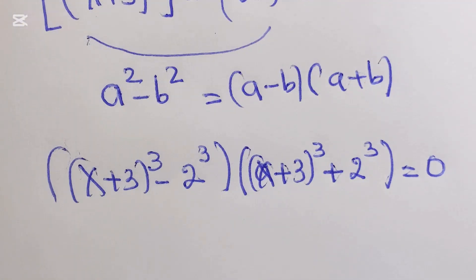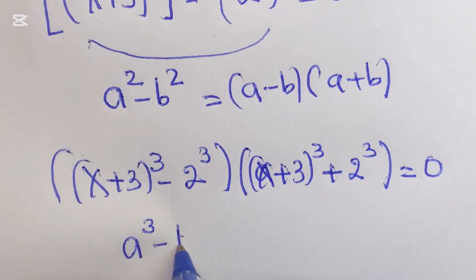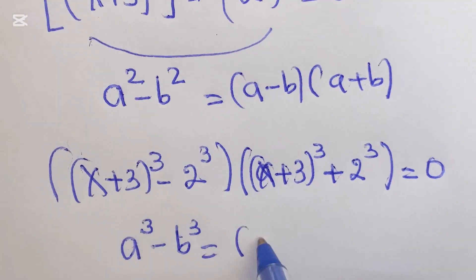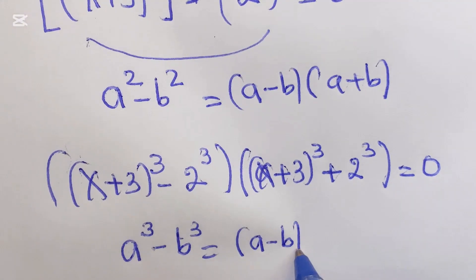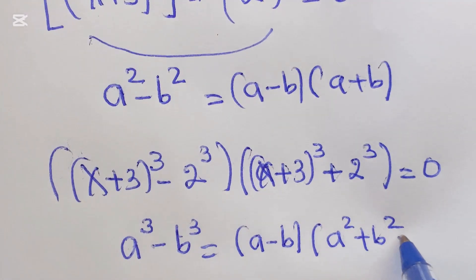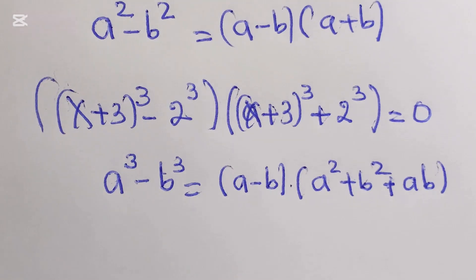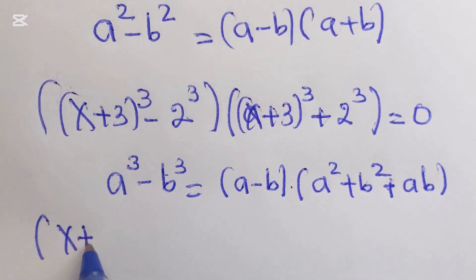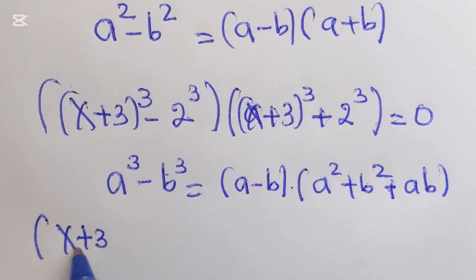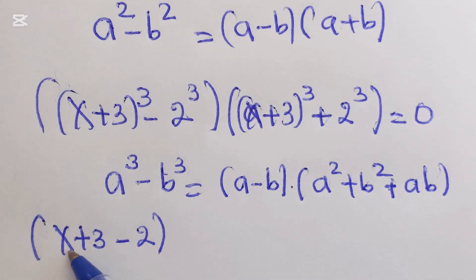This gives another formula: a to the power of 3 minus b to the power of 3 equals a minus b, times a squared plus b squared plus a times b. Our a is equal to x plus 3 and our b is equal to 2.